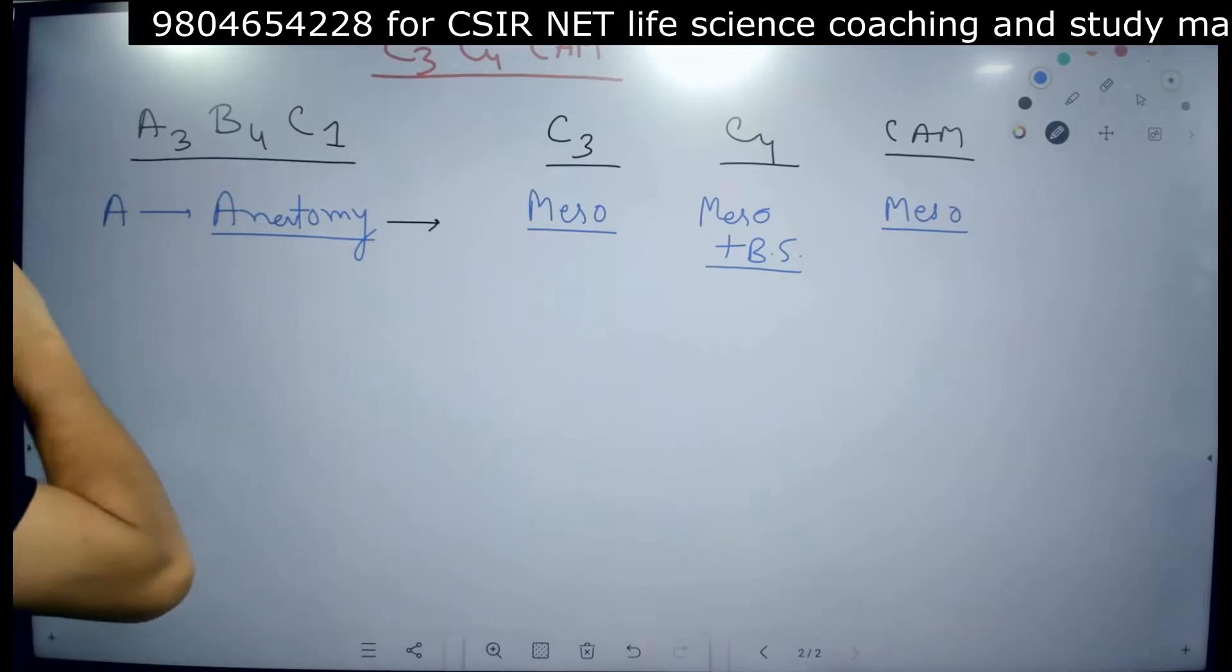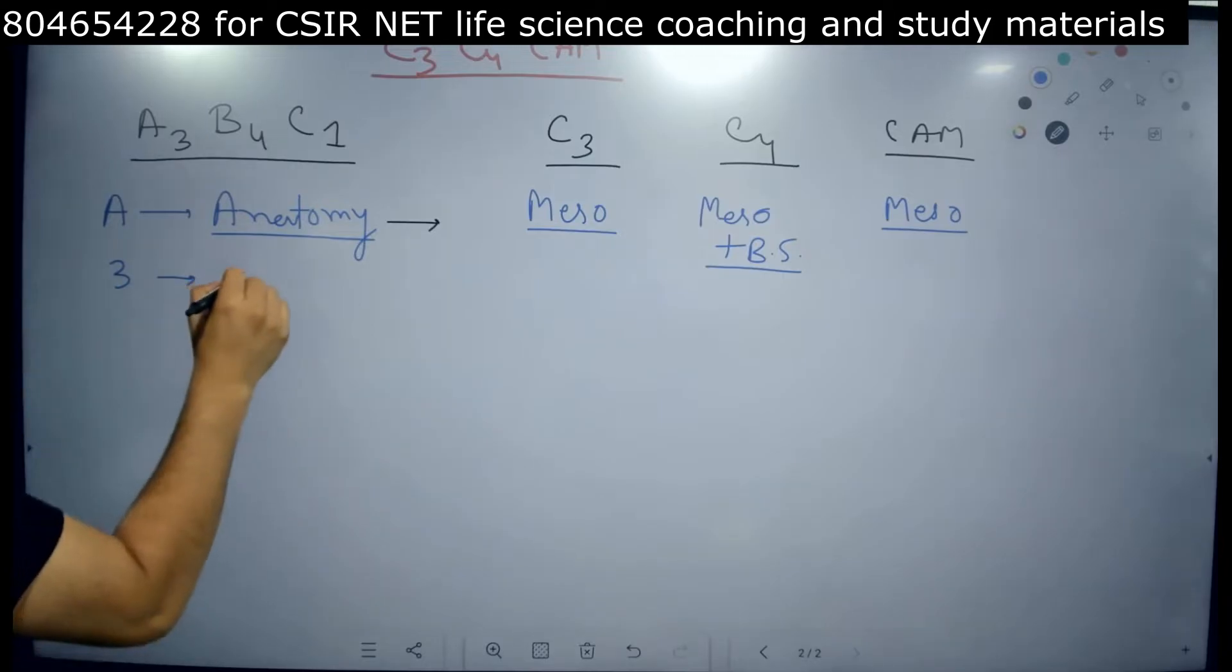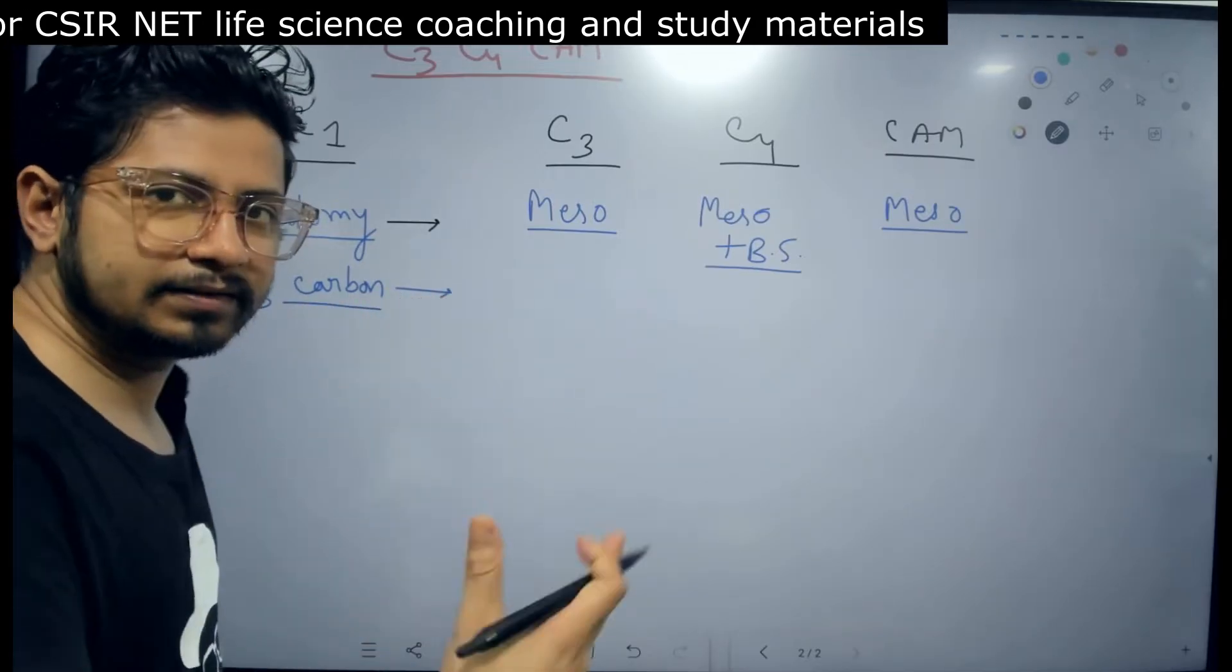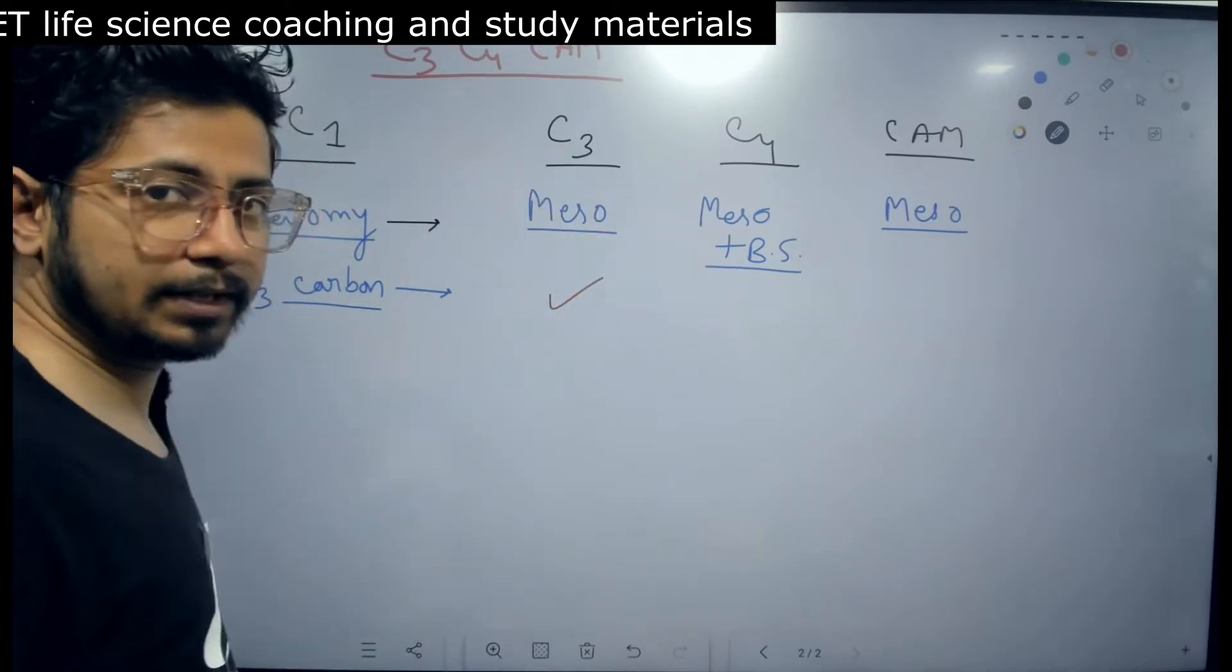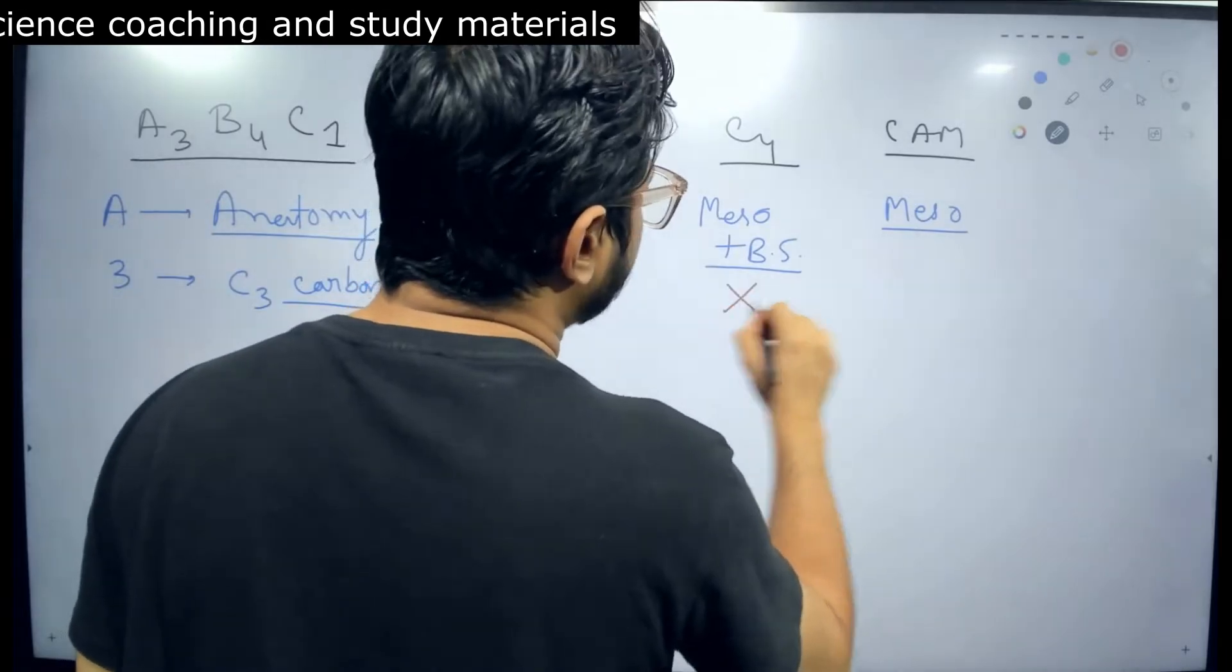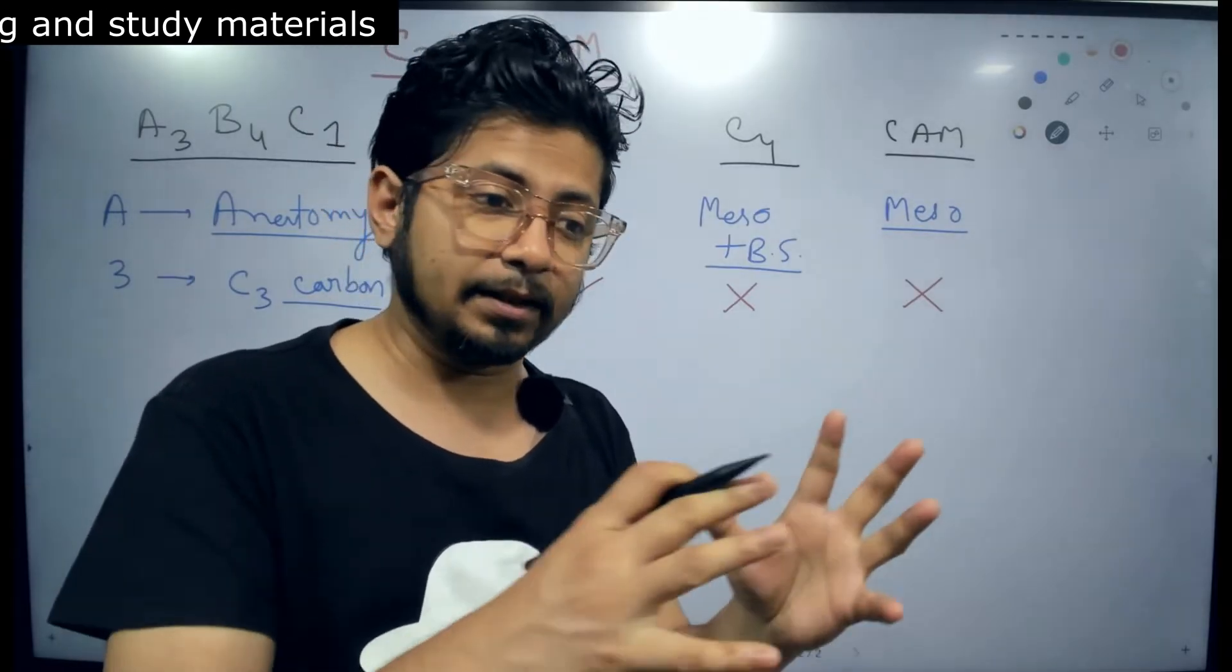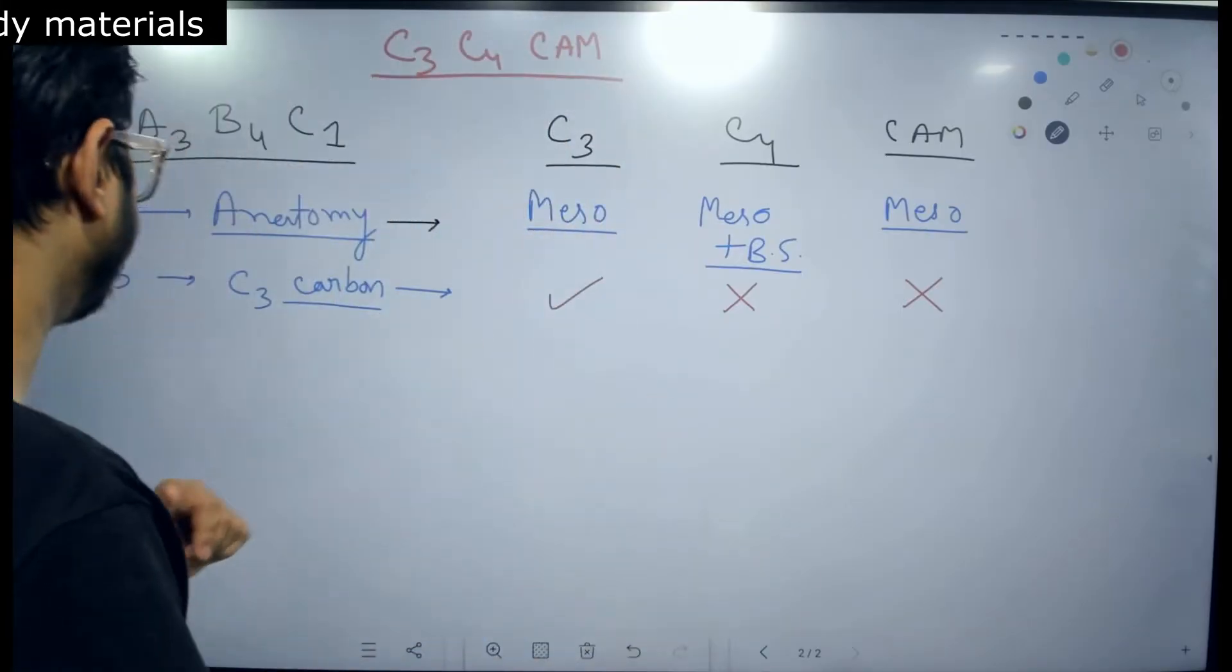The next important parameter. You can see the value 3. 3 stands for 3 carbon, 3 carbon compound. Whether we have a 3 carbon compound as a product or not. In C3 pathway yes we have a 3 carbon compound as the first stable intermediate, but not in C4, not in CAM plants. In C4 and CAM plants we don't have 3 carbon compound as a stable intermediate in the process of Calvin cycle. There are 4 carbon compounds. That is the difference.